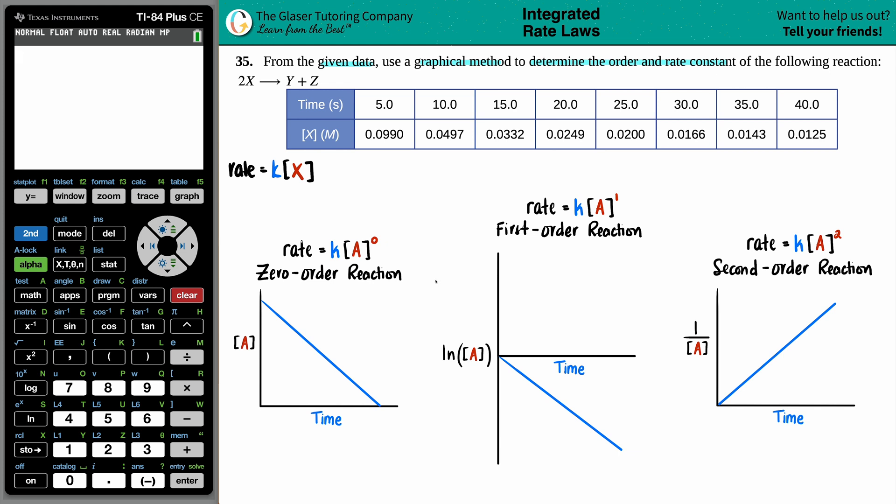Now in this case, we have to basically plug in this data to see which graph will give us a linear line. What I like to do is I like to start off with zero order and then I just kind of work my way up. The idea here is that you're going to plot your x and y axis to see if you get a linear line. If in fact we do not get a linear line when we plot it, we know that it's not going to be zero order and you move on.